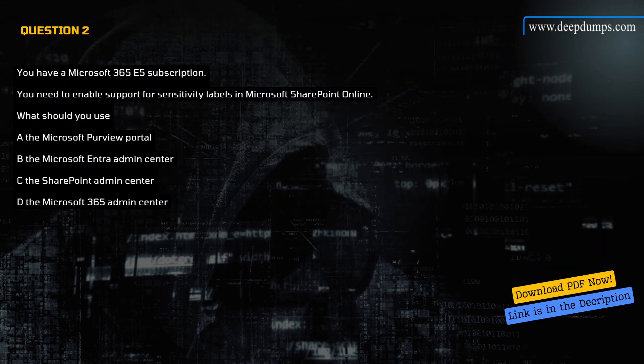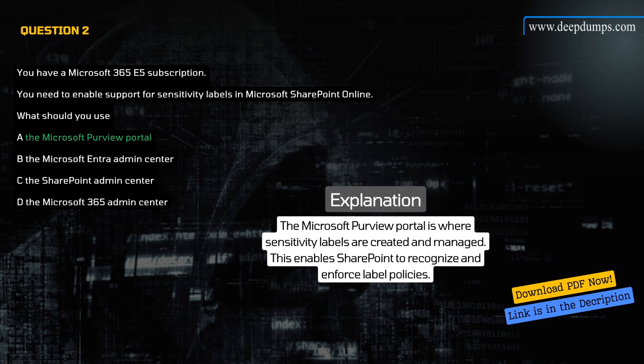Question 2. You have a Microsoft 365 E5 subscription. You need to enable support for sensitivity labels in Microsoft SharePoint Online. What should you use? A) Microsoft Purview Portal, B) Microsoft Entra Admin Center, C) SharePoint Admin Center, D) Microsoft 365 Admin Center. Correct answer is A. Explanation: The Microsoft Purview Portal is where sensitivity labels are created and managed. This enables SharePoint to recognize and enforce label policies.